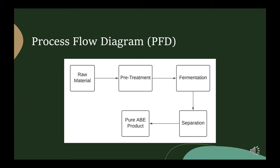Moving on from there, separation is required in order to separate out the products of interest, including getting separate streams for acetone, ethanol, and butanol, as well as a wastewater stream. Finally, pure ABE products are further refined through other separation techniques and are used for their intended purposes, be that a biofuel, organic solvent, or others.